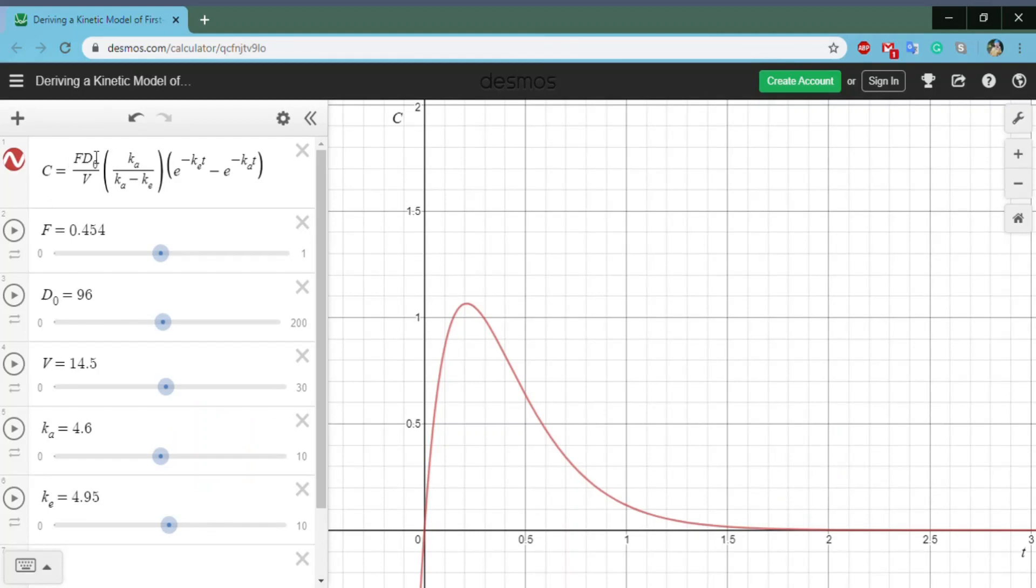What I did was I took our handy-dandy equation and I put it into a handy-dandy software called Desmos. Desmos is this graphing tool, and you can see this beautiful curve that this equation produces. On the y-axis we have C, concentration of the drug in the body, and on the x-axis we have T, for time.